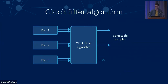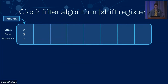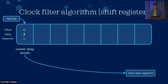We take all these samples and put them into the clock filter algorithm. This takes samples over time for each server and gives us a single sample per server, also telling us which servers are selectable. The way this works is by using an eight-stage shift register for each server, putting new samples into one end, and our value for the server is just the best sample from this shift register. By best sample we mean the sample with the lowest delay, because statistically samples with the lowest delay are likely to have the most accurate offset.